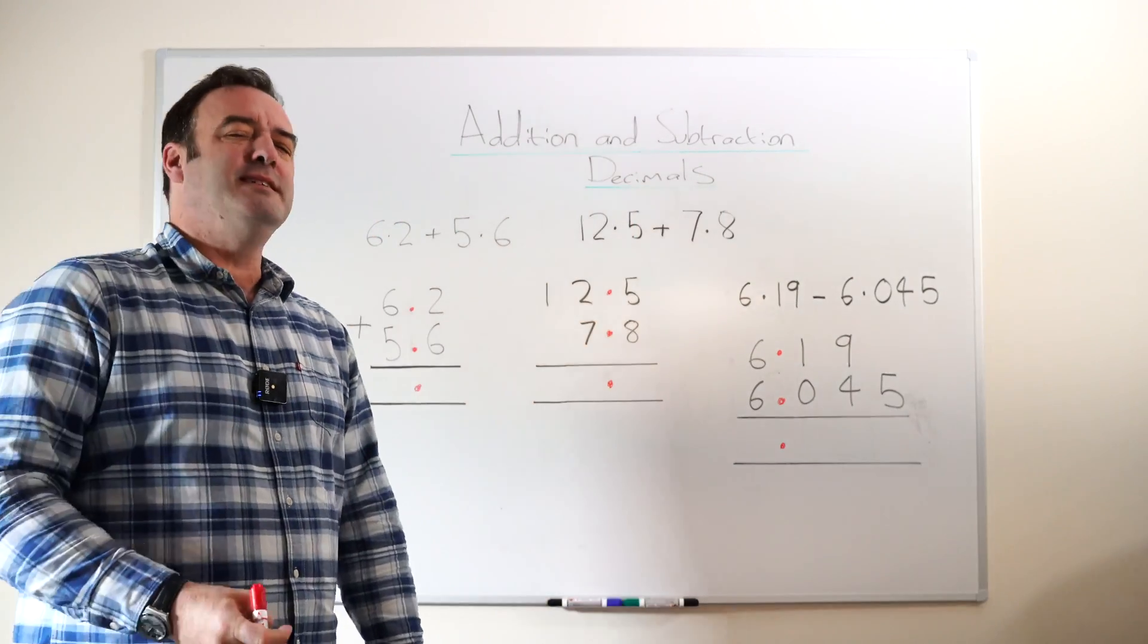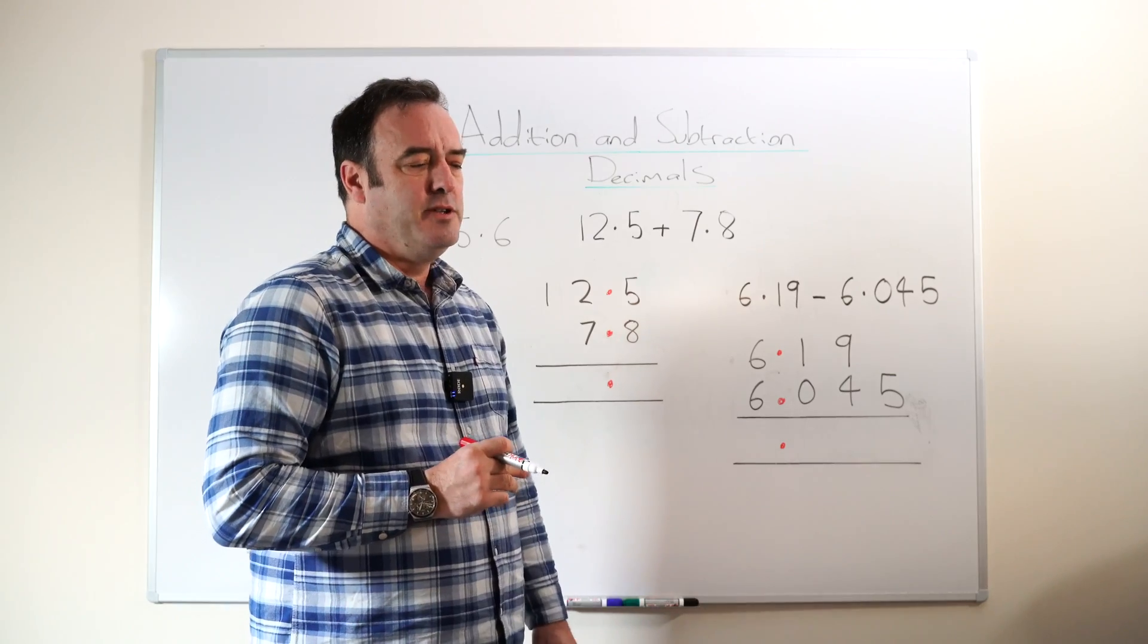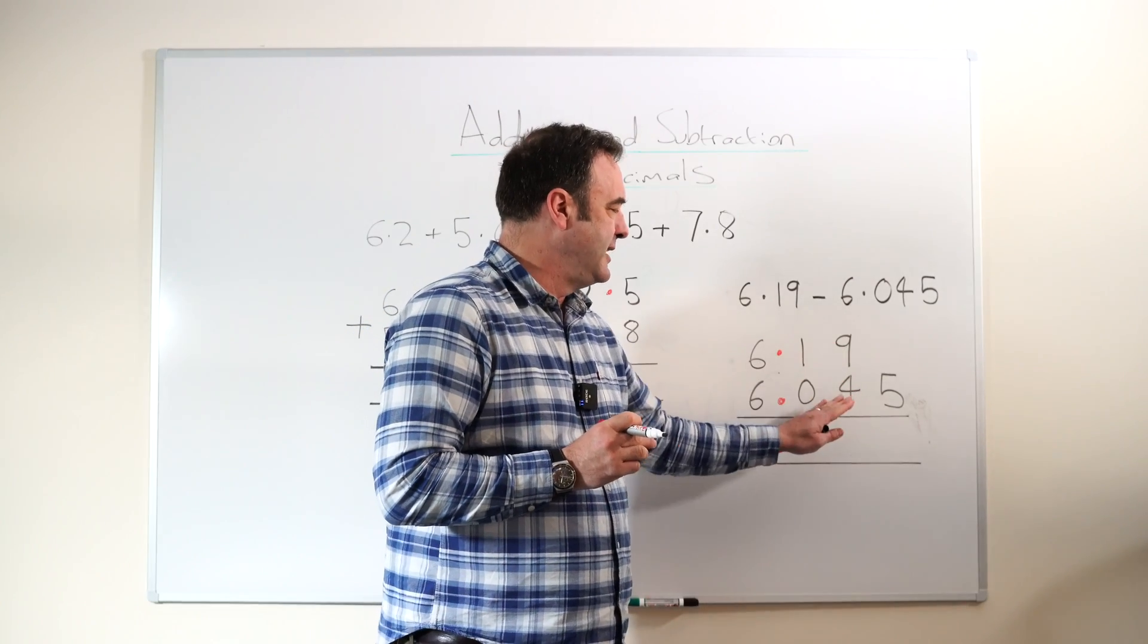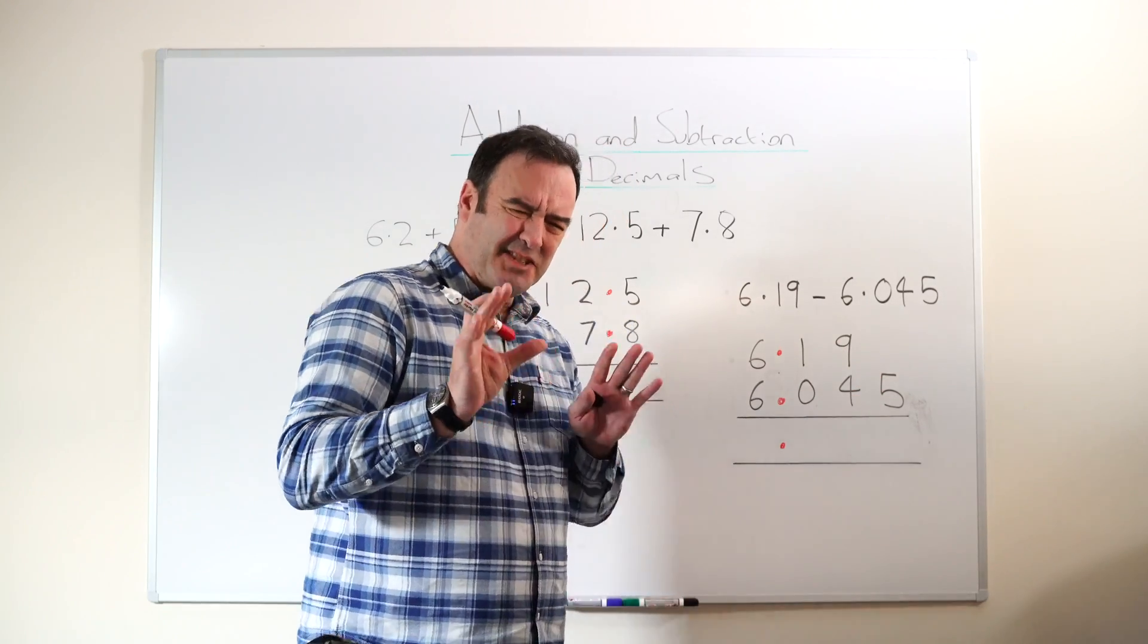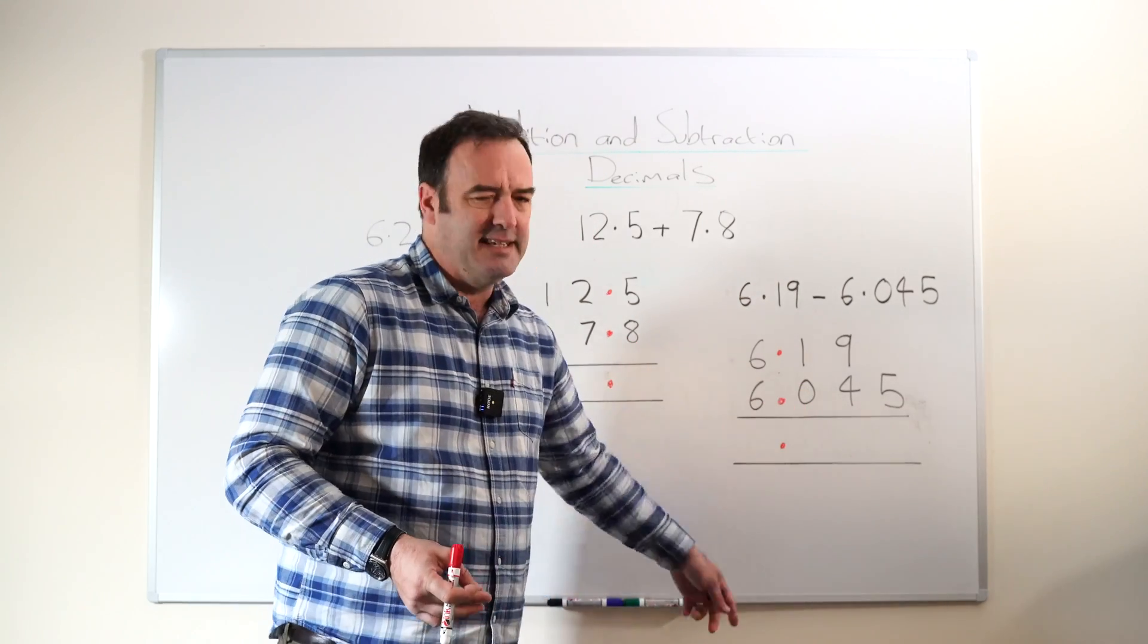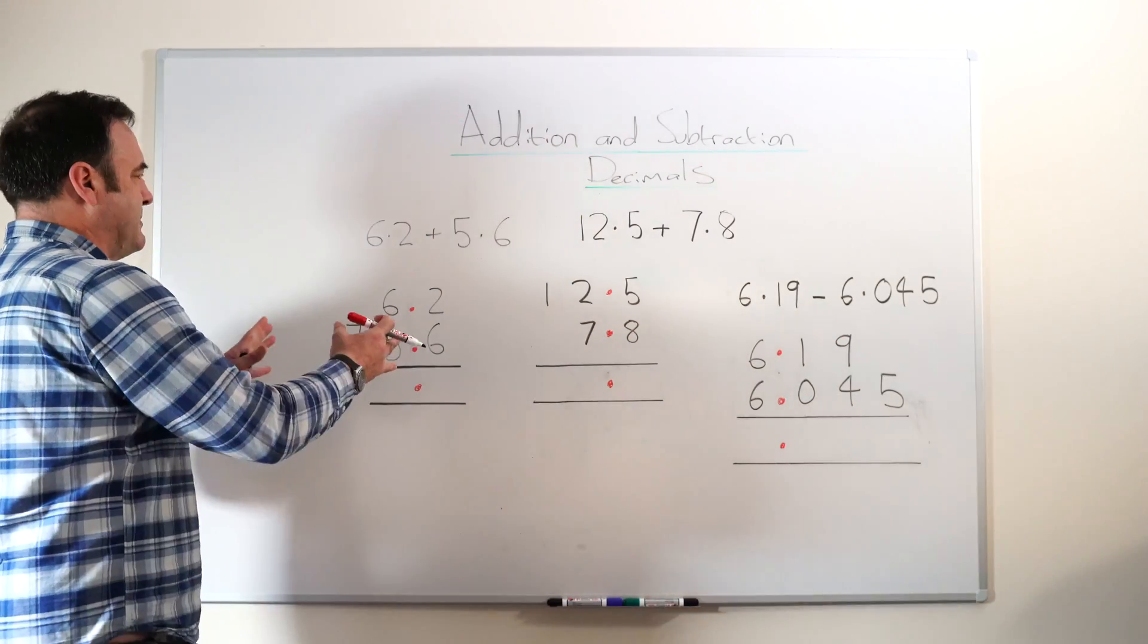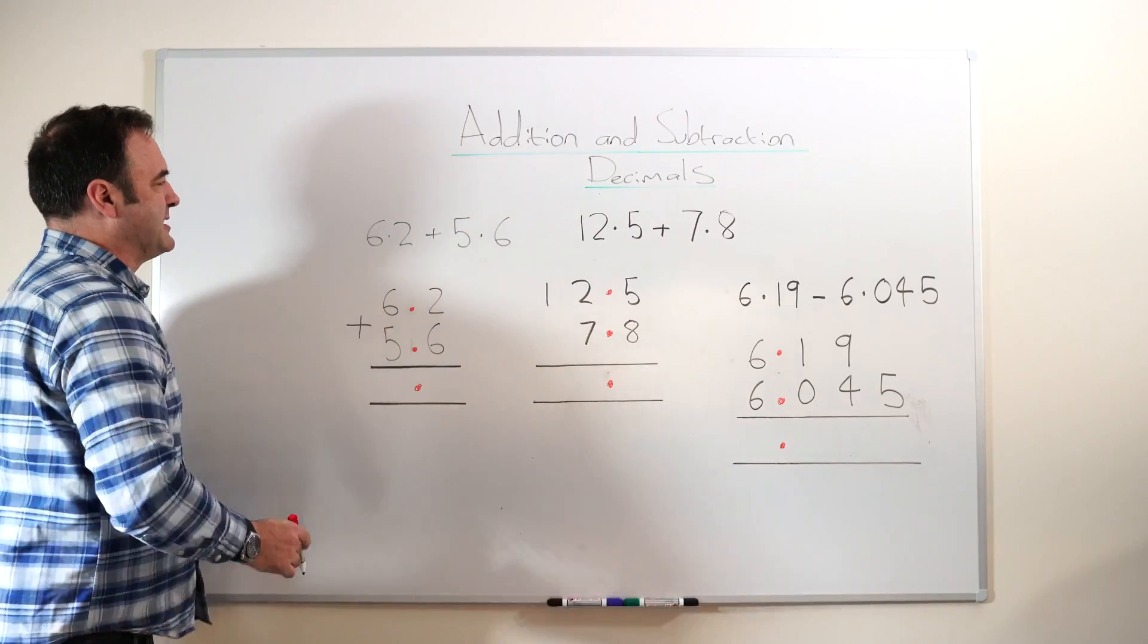The main ways in which we see children come unstuck with this is not keeping things lined up properly in columns, and when children are not quite sure how to align numbers with a different number of digits. Those are the two key areas, and of course the common things like forgetting to include a carry, or exchanging when subtracting. They're the common difficulty areas. I'm going to start with something nice and easy here.